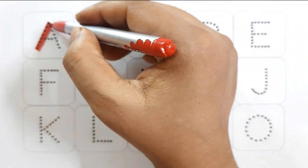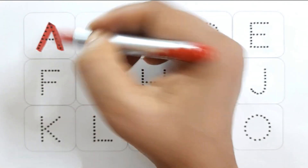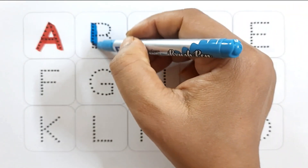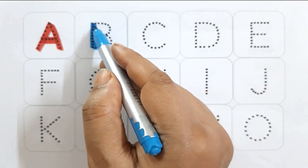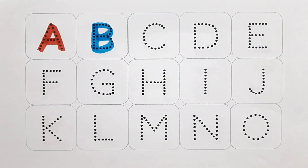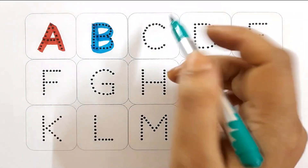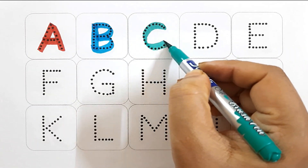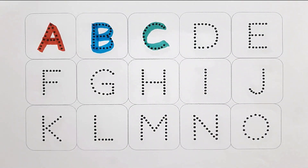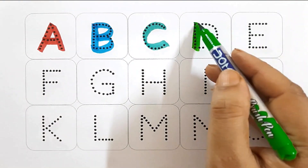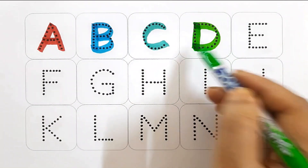A. A for apple. B. B for banana. C. C for car. D. D for dog.